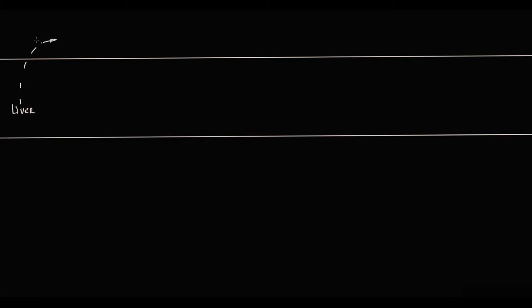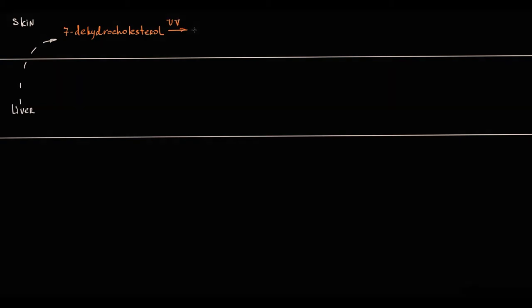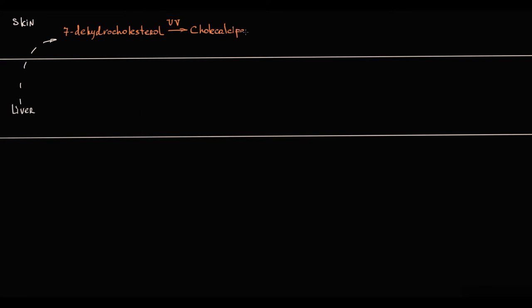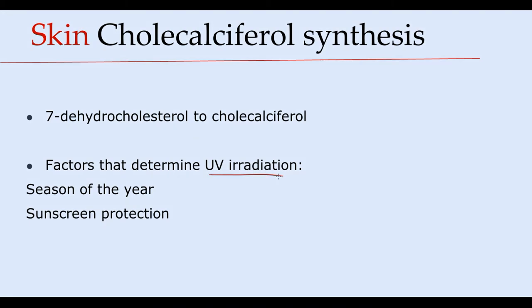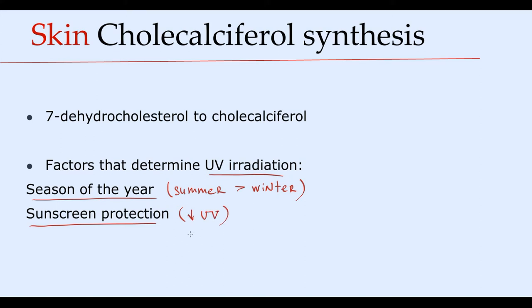Initially, the liver synthesizes 7-dehydrocholesterol from cholesterol, which is delivered to the skin. Under ultraviolet radiation, this molecule undergoes photolysis that results in the production of cholecalciferol. Obviously, the rate of this reaction depends on ultraviolet radiation, which in turn depends on a few factors. First, it's the season of the year — in summer, sun exposure is greater and ultraviolet radiation is much higher than in winter. Also, sunscreen protection can markedly decrease exposure to ultraviolet radiation, thereby decreasing the rate of this reaction.